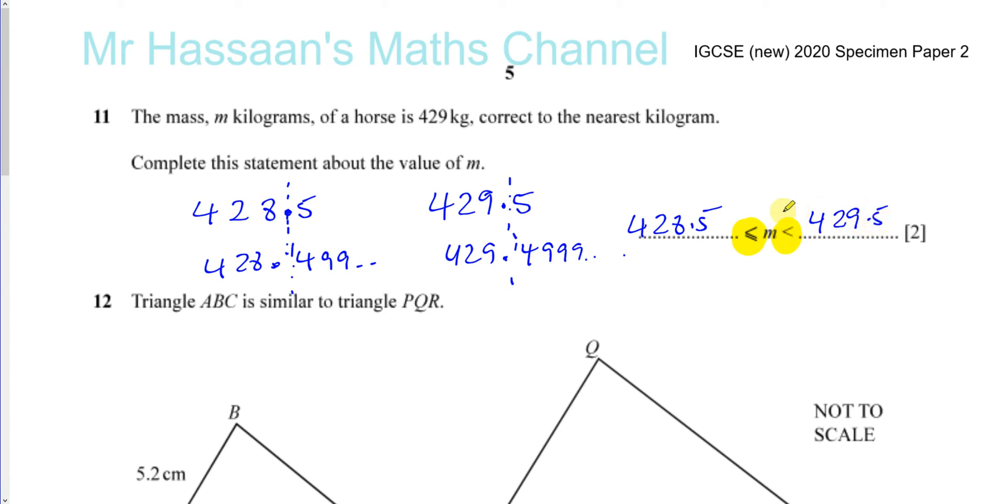That's why we write it as 429.5. Don't write 429.4. Don't write 429.49. You have to write 429.5 knowing that this number itself is not included, but everything that's just below it is included, including numbers like this. So that's how you deal with this upper and lower bounds.